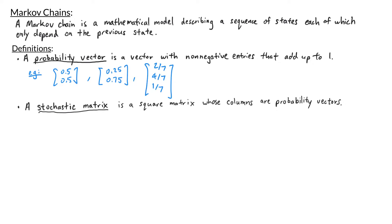Next, a stochastic matrix is a square matrix whose columns are probability vectors. An example of a stochastic matrix would be something like [1/3, 2/3; 3/5, 2/5]. Here we have a matrix whose columns are probability vectors because each entry is non-negative and the columns all add up to one.